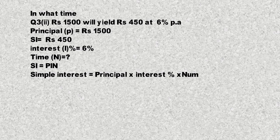یہ international formula ہے — سارے ملکوں میں اسی طریقے سے لوگ simple interest اور principal amount نکالتے ہیں۔ PIN کے طریقے سے ہم اس کو find کریں گے: Simple Interest = Principal × Interest Percent × Number of Years۔